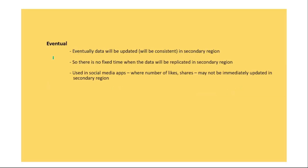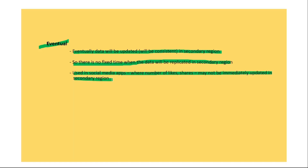Eventual consistency means the data will eventually be updated and consistent in the secondary region, but there is no fixed time for when replication will occur. It is generally used in social media apps where metrics like number of likes or shares do not need to be immediately reflected in the secondary region.